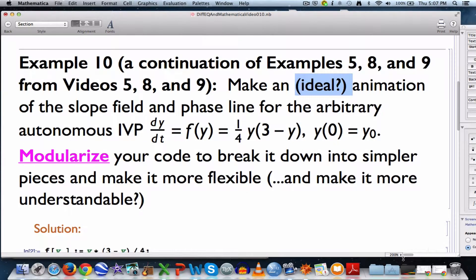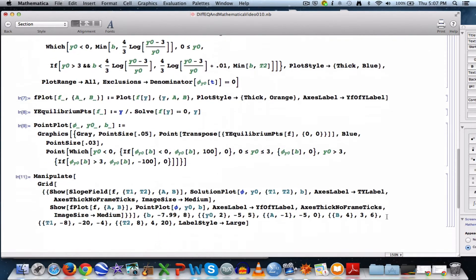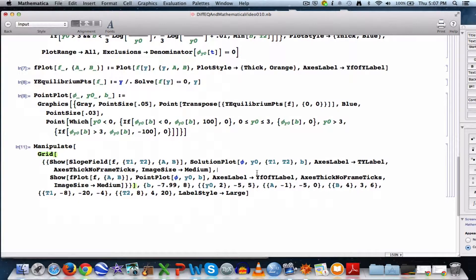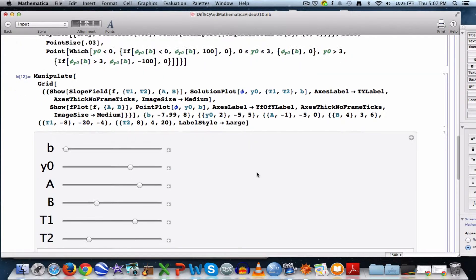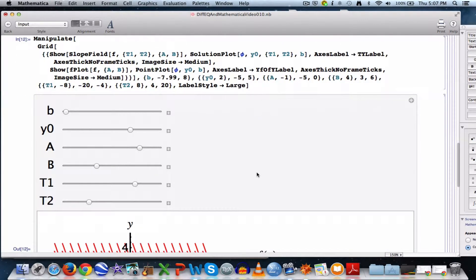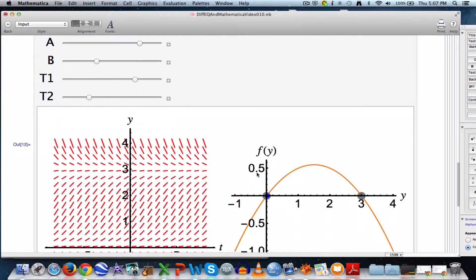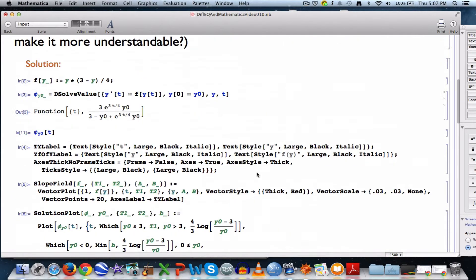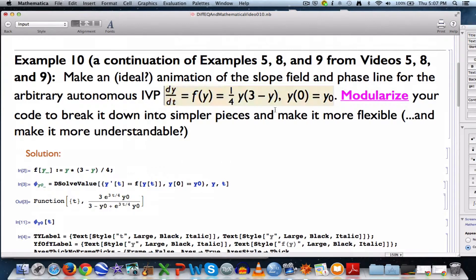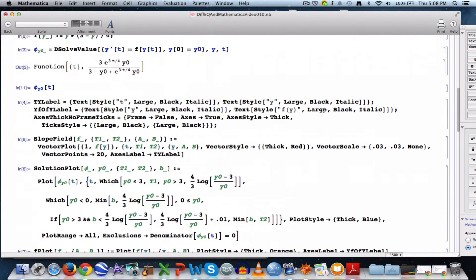All right, I'm just going to go ahead and run all the code here. I've got a bunch of different lines of code. The manipulate, that creates the animation. Let's look at the animation and talk about ways that it is flexible and ideal. So again, let's look at the differential equation again, quick. You should pause the video and write this down if you haven't written it down before. The right-hand side function f of y is 1 fourth y times 3 minus y.